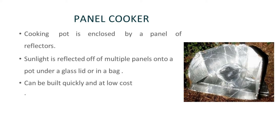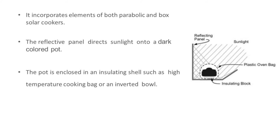In the panel cooker, the cooking pot is enclosed by a panel of reflectors. Sunlight is reflected off multiple panels onto a pot under a glass lid or in a bag. It can be built quickly and at lower cost. It incorporates elements of both parabolic and box solar cookers. The reflective panel directs sunlight into a dark colored pot, and the pot is enclosed in an insulation cell such as a high temperature cooking bag.